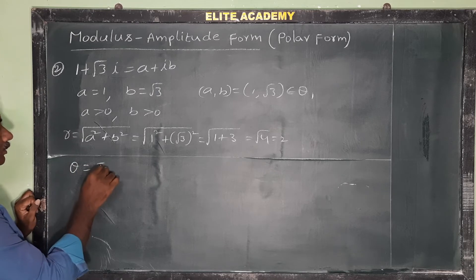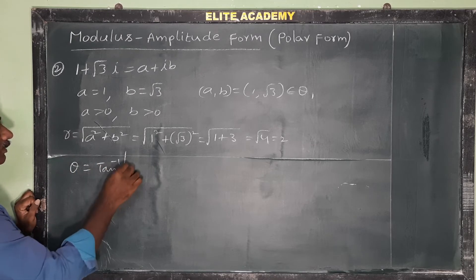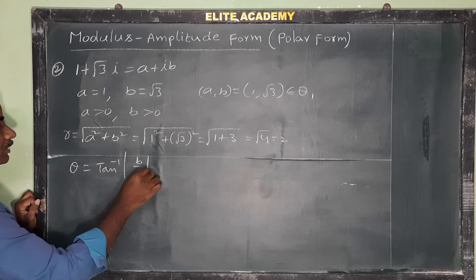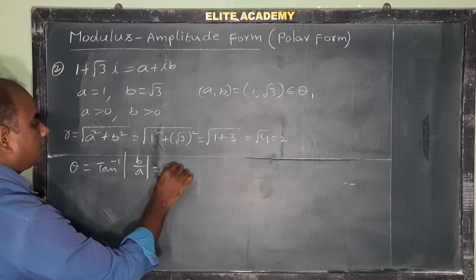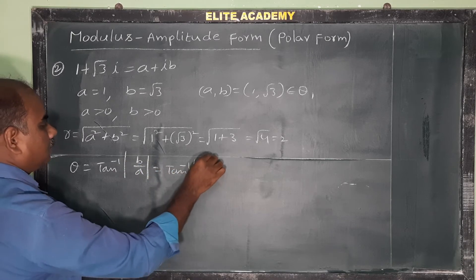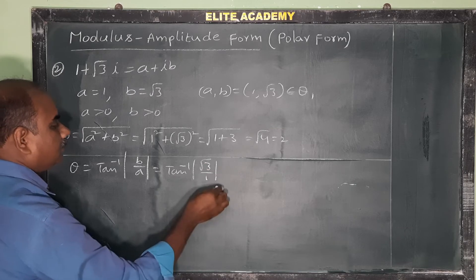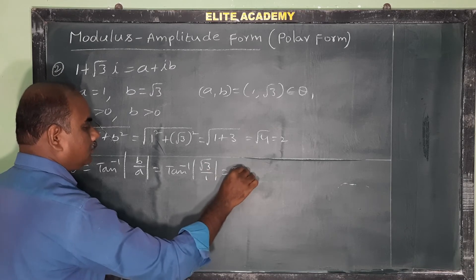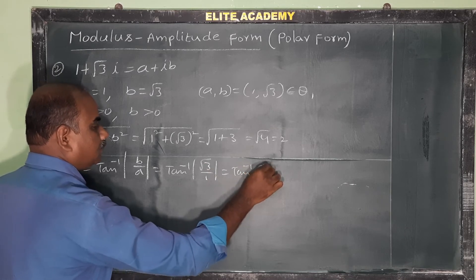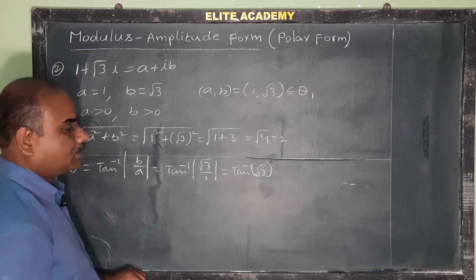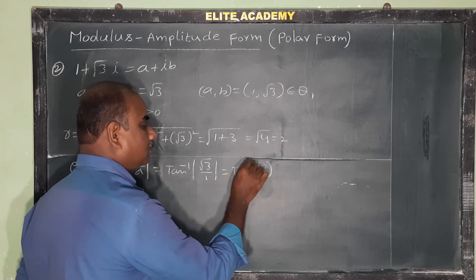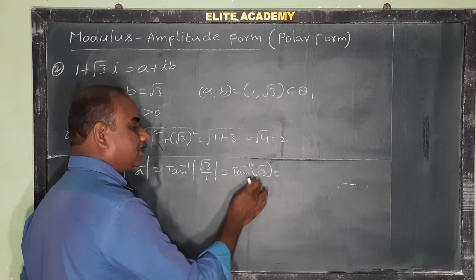Theta is equal to tan inverse of the modulus of b by a, which is tan inverse of root 3 by 1, which equals tan inverse root 3. Since tan of 60 degrees is root 3, this equals 60 degrees or pi by 3.